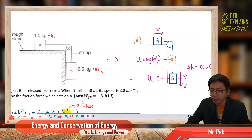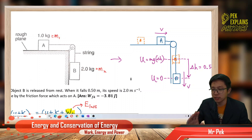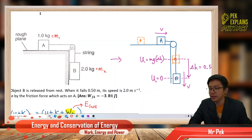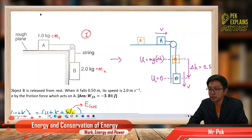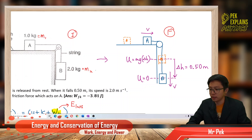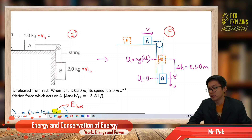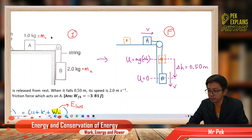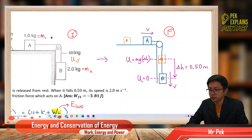Let's identify the initial condition — the energy that exists in the initial condition and also the energy that exists in the final condition. Initially, block B is at a certain height, so it has gravitational potential energy. This is for block B.